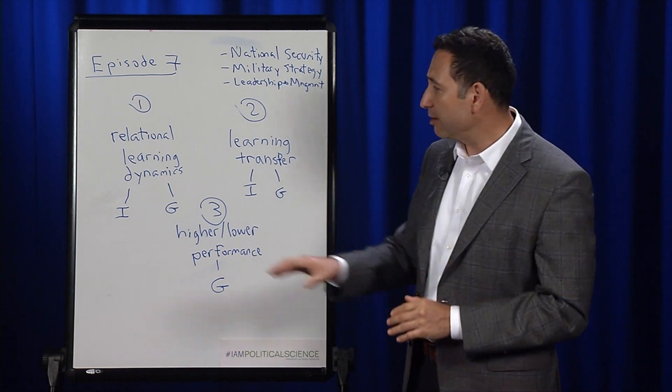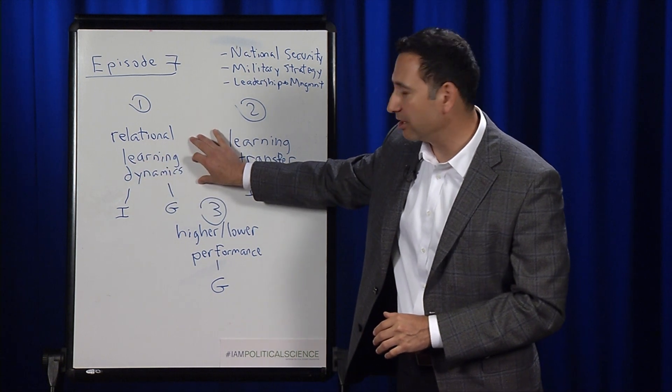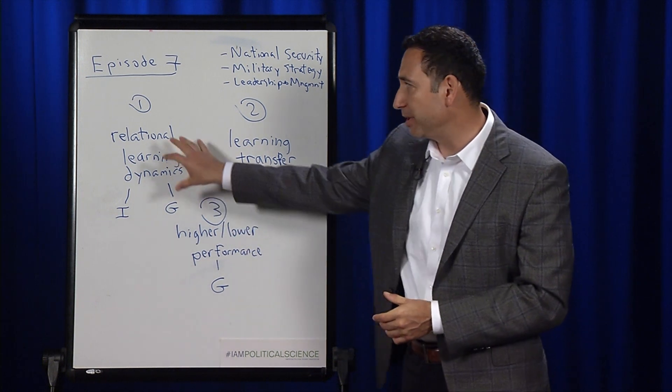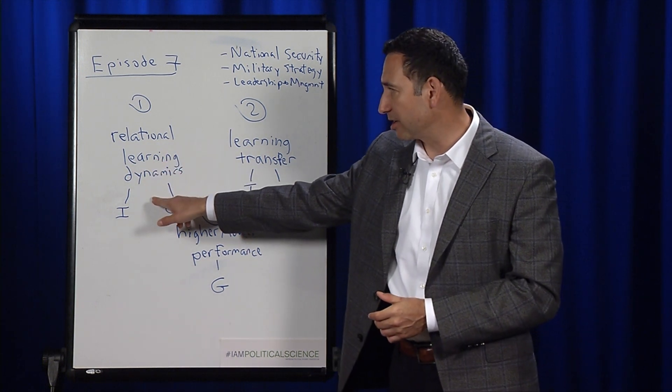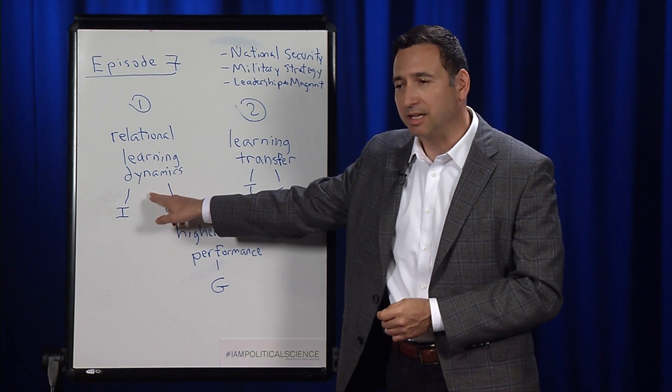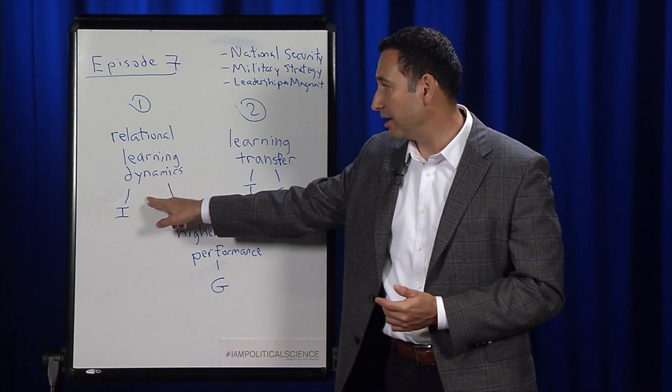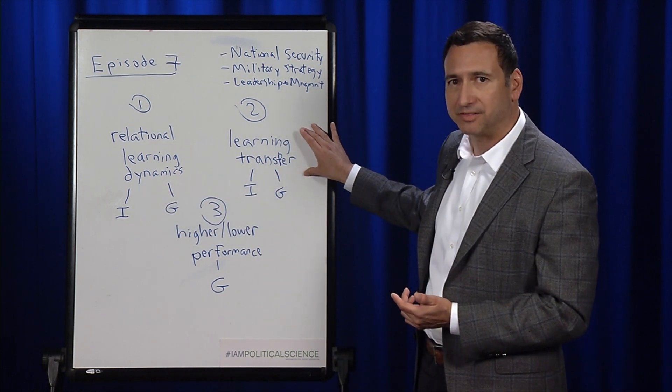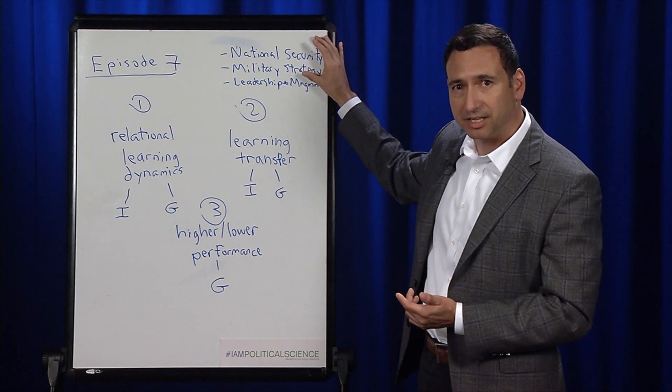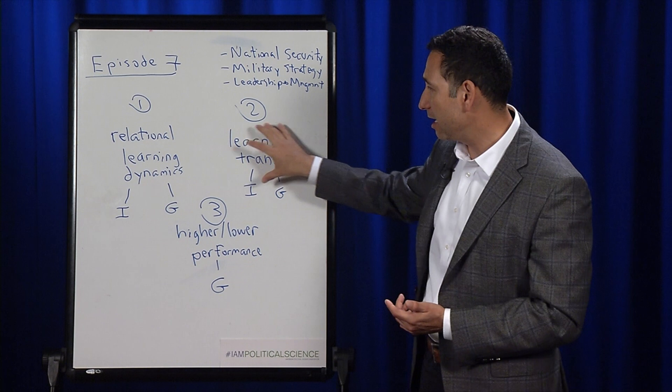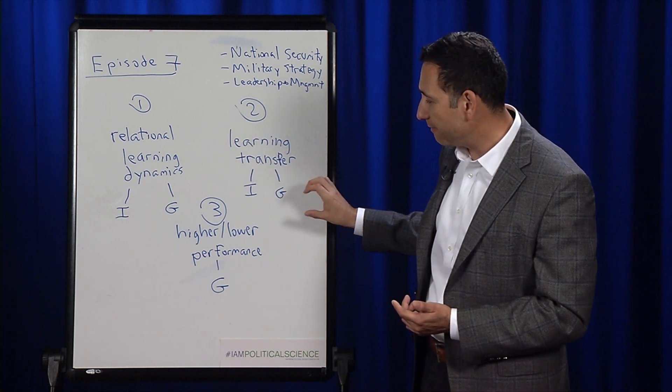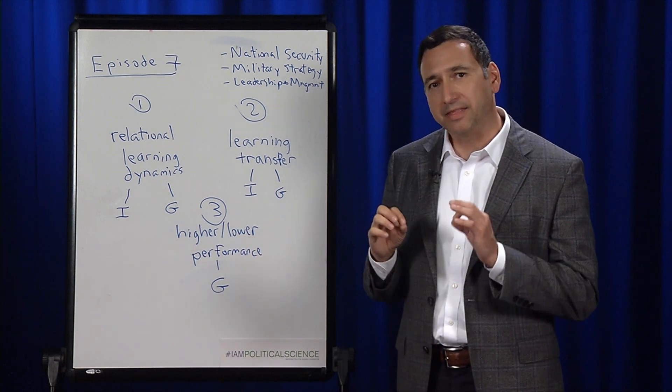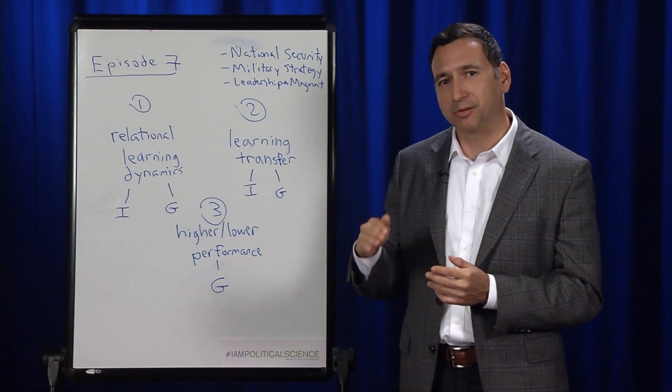Once again, I think we're focused on relational learning dynamics. We're able to get at this with survey instruments and maybe some basic observation, but this is pretty generic. This can occur well in a business environment, in engineering, in science, or in the military. But we're concerned about learning transfer, which relates to strategy, military thinking, and leadership, and I'm not sure we're getting at this at the group level. And finally, we're concerned about identifying groups that are better and groups that are worse, and that informs our curricular improvements from one year to the next.